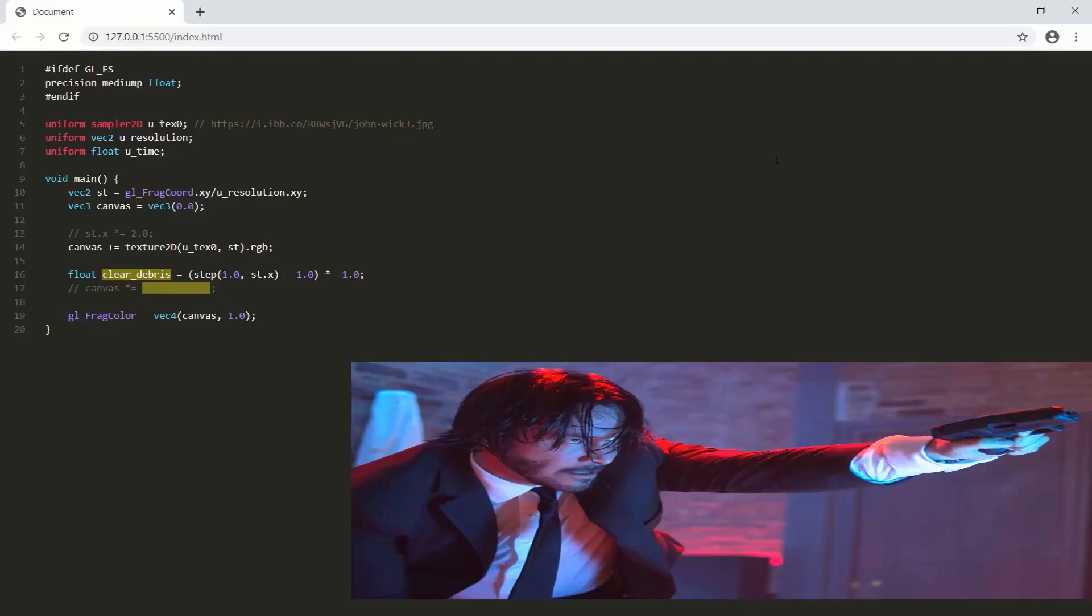So I have a basic fragment shader up and running. If you don't know how to do that, I'll have a link in the description below or a card on the top right. I've just loaded a texture in using the uTex0 and the Texture2D function or method. I'm not going to go over this. It's a simple function. You can just Google it. It just allows you to load textures or images onto your canvas.